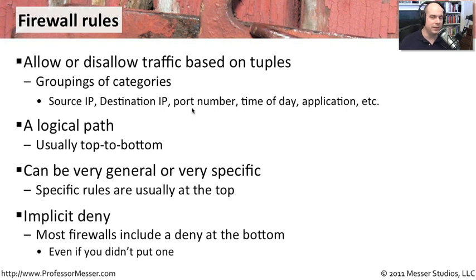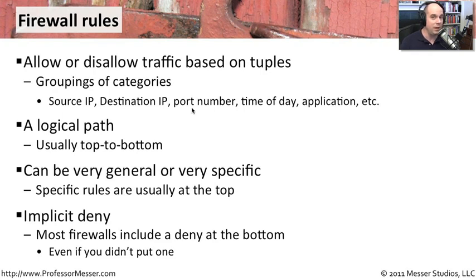In almost all firewalls — a good firewall anyway — there is something called an implicit deny at the very bottom of the list. That means if traffic goes through your entire list of rules without hitting any of them, it gets dropped — it is implicitly denied. Some people will put an explicit deny at the bottom: a rule that says deny any-to-any traffic at the bottom. Sometimes that's useful so you can see and log it, because implicit denies typically don't log traffic. You can imagine how enormous the log would be if you logged everything from an internet connection not intended to come inside your network. Some people do want to capture that information, so they add an explicit deny to log some of that traffic.